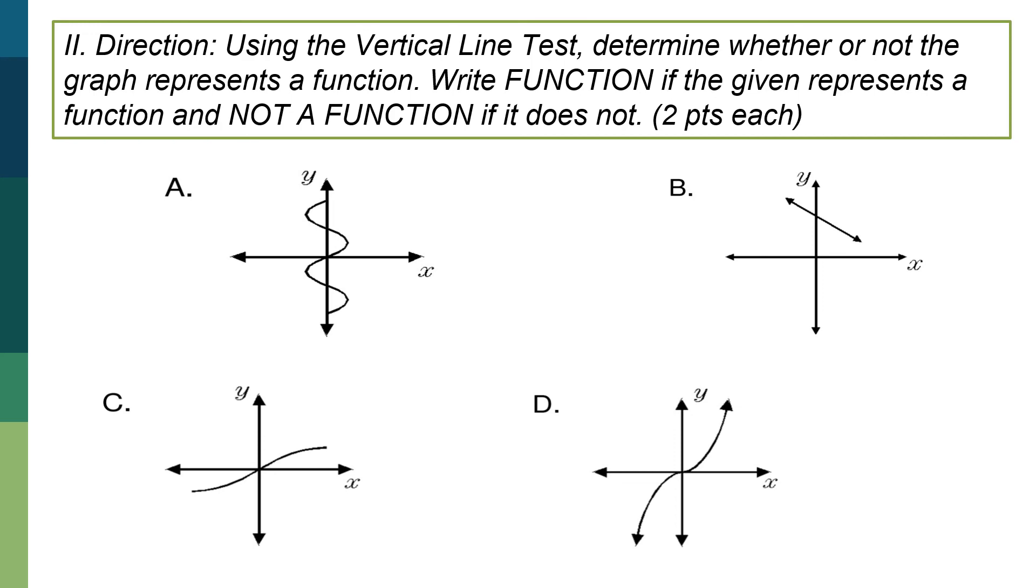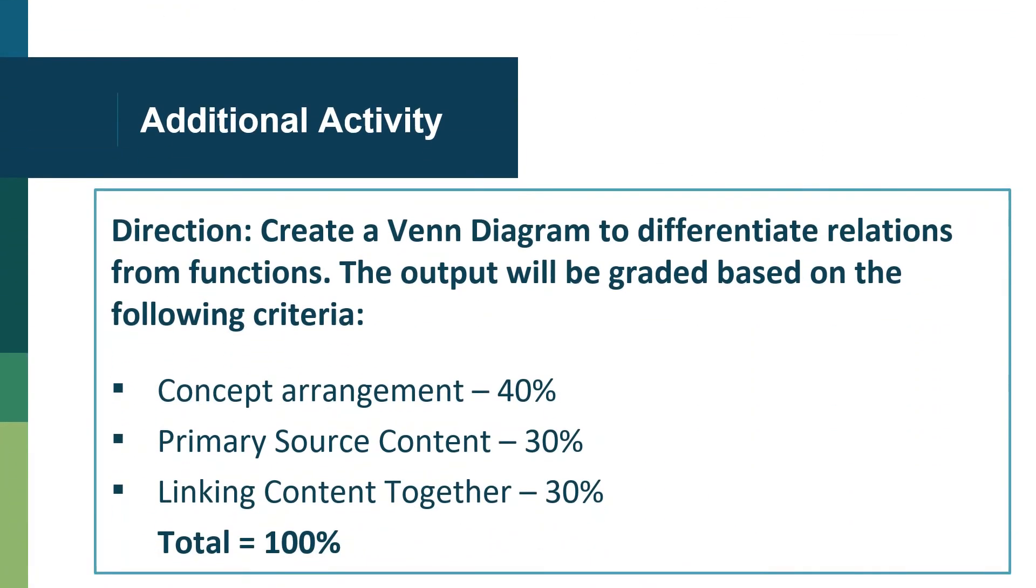As for your additional activity, you have to create a Venn diagram to differentiate relations from functions, and then the output will be graded based on the following criteria. Concept arrangement, that's 40%. Primary source content, 30%. Linking content together, that's 30%, for a total of 100%.